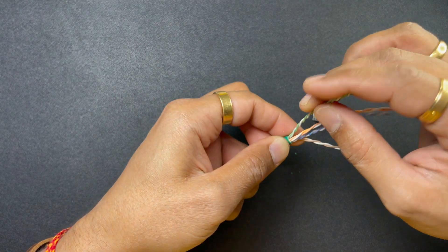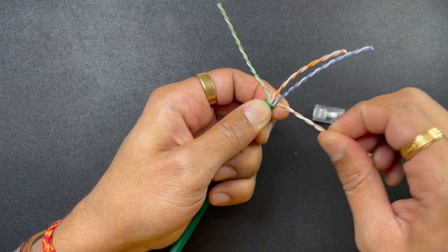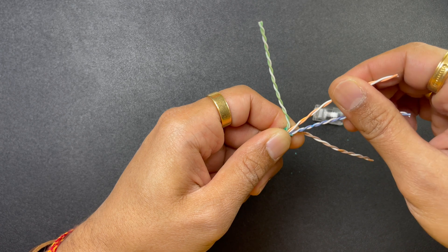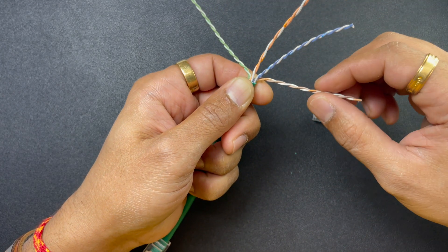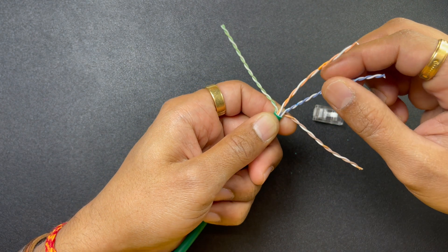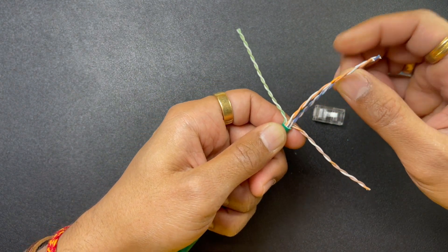Okay, so here I'm going to terminate it on 568A. So I'm going to start with the green pair, brown pair stays at the end, and we will be splitting the orange pair.